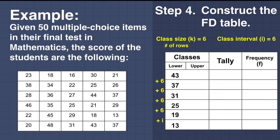Now let us complete the upper values. Observe the second row — the number is 19, so the upper limit of the first row is 18. We can also solve this using the formula: lower value plus I minus 1, so 13 plus 6 minus 1 equals 18. For the next rows, just add the interval of 6: 18 plus 6 is 24, plus 6 is 30, plus 6 is 36, plus 6 is 42, plus 6 is 48. Remember that the highest value, 48, must be included in the upper class — it falls in the class 43 to 48.